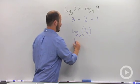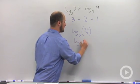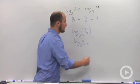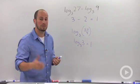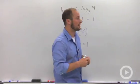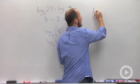27 over 9 is 3, log base 3 of 3. 3 to what power is 3? This is 1. So what this gets us is the quotient rule of logarithms, and what that tells us is if we are ever dividing within our log,